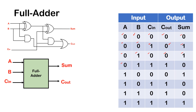The next combination: A=0, B=1, sum is 1, and this time carry-in is 1. We add them: sum is 0 and we generate a carry, so carry-out is 1.